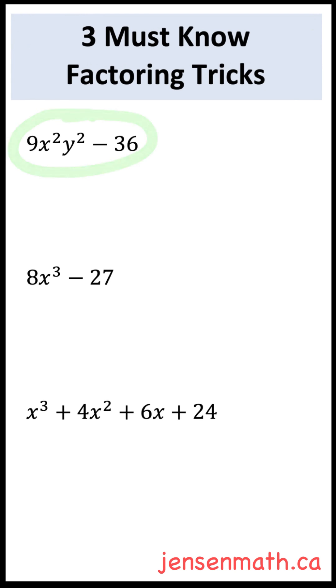This first expression is a difference of squares. Notice both the terms are perfect square values. The first term is 3xy being squared, and the second term is 6 being squared.